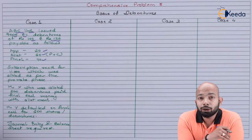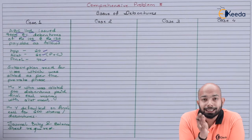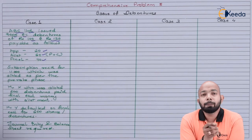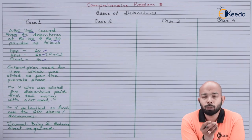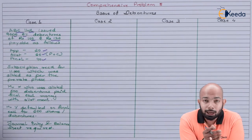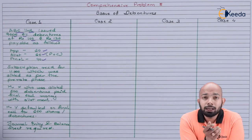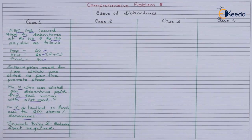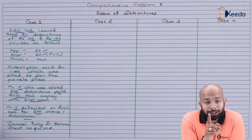The question also states certain additional details. Mr. X, who was allotted 500 debentures, paid the final call money at the time of allotment itself — so we have calls in advance here. Mr. Y defaulted on the final call payment for 600 debentures. We have to pass the journal entries and show the balance sheet for this case.